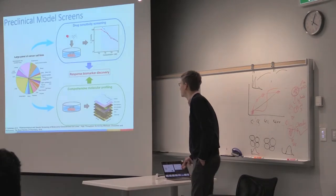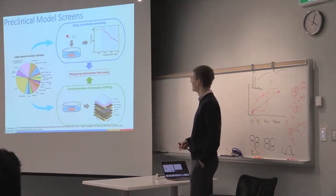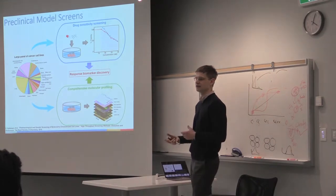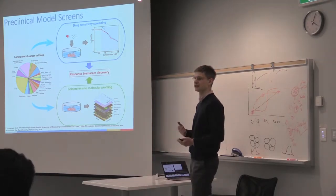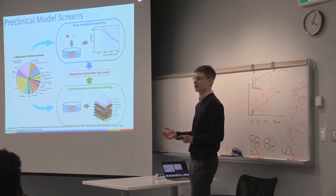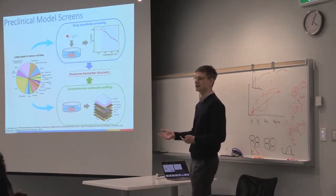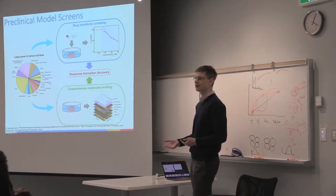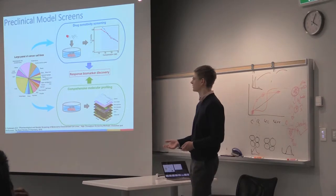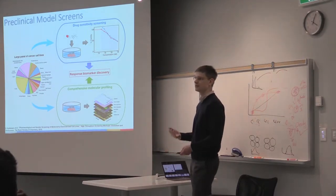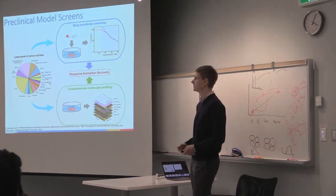So what do we mean by high-throughput pharmacogenomic datasets or studies? The idea is to take a panel of model systems, usually immortalized cancer cell lines, and subject them to two different types of screening. One is a drug sensitivity screen testing how well drugs inhibit growth at various concentrations. Concurrently, you profile these same cancer cell lines on a molecular level, looking at their DNA, transcriptome, and epigenome, with the goal of correlating molecular features with drug response to find features predictive of therapy response.